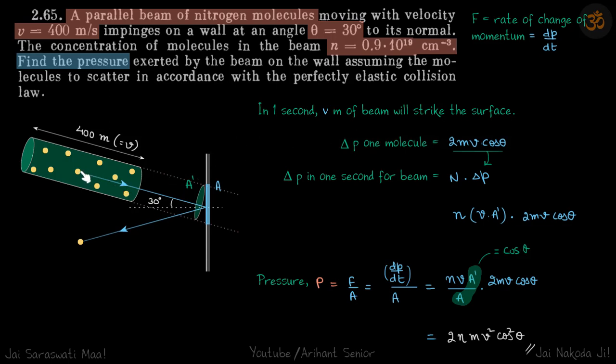Now let's take one molecule. It's going to hit and reflect back. So change in momentum of one molecule is 2mV cos theta. The striking velocity is V cos theta, and it's reflected at V cos theta. So 2V cos theta times m. This is change in momentum of one molecule.